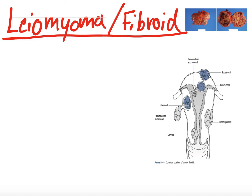Today we'll be talking about leiomyomas, more commonly known as fibroids. This is another subset video off of the general introductory video on abnormal uterine bleeding — I'll link it in the top right corner. We're going through the differential diagnosis known by the mnemonic PALM-COEIN. The P was endometrial polyps, the A was adenomyosis, and the L of PALM is leiomyoma, also known as fibroids.